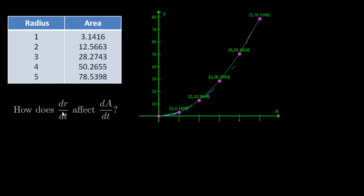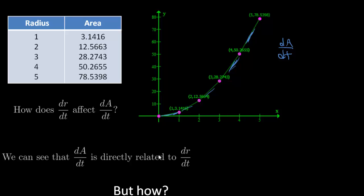So how does dr/dt affect dA/dt? Like how does the change in the radius affect the change in the area? Well again, dA/dt is the slopes of these, alright, because it's the change in the area. Now we know that dA/dt is directly related to dr/dt, alright, we just got to figure out how.